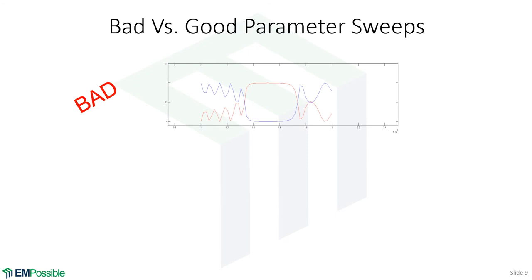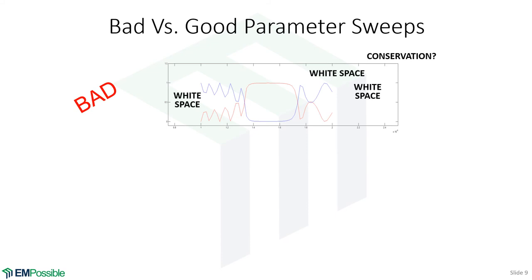Now let's look at the difference between good and bad parameter sweeps. Here's a bad plot from MATLAB — there are a lot of problems. First: where is the conservation of power line? I always like to plot a third line adding reflectance and transmittance together, looking for a flat line across the whole plot. If there's no loss or gain, it should be flat — that's an awesome check to make sure everything's right. There is no conservation line here — we need that. Also, there is a lot of wasted white space. Unless you intend to insert a device image there, get rid of it.